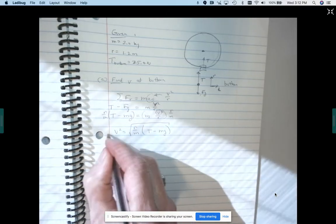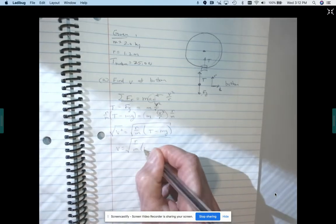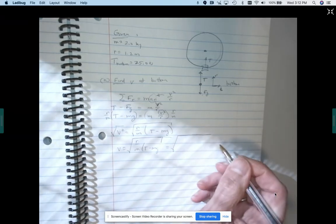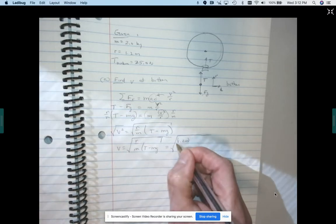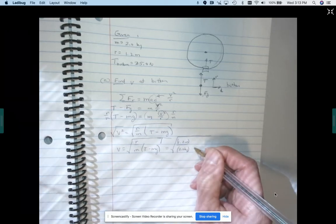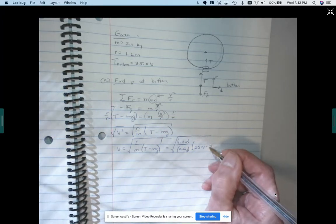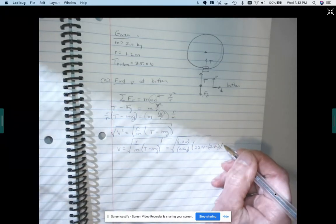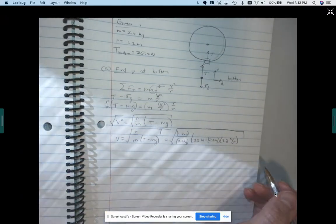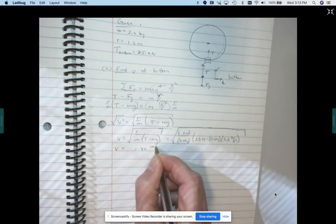And then we'll take the square root of both sides. So we get V is the square root of R over M times T minus MG. And that equals, we'll see if I can plug in and not run out of room. My radius is 1.2 meters. My mass is 2.0 kilograms. My tension is 25 newtons. And then I have my mass, 2.0 kilograms times the acceleration of gravity, 9.8 meters per second squared. And if I plug in, I get a speed of 1.8 meters per second.